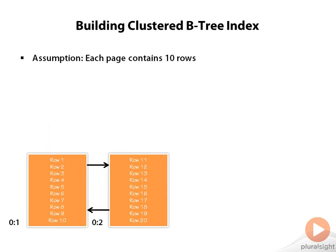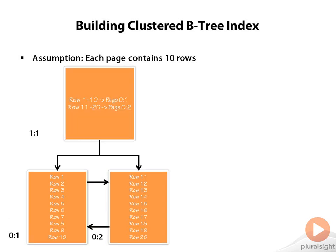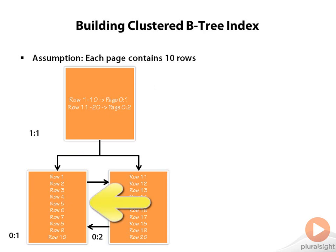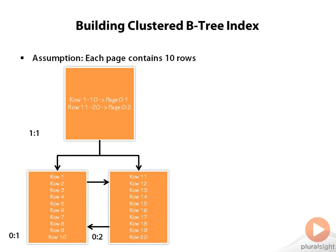However, the database needs one more page to track those entries. Let's introduce one more level here. This new page is the root page in this scenario. It's on level 1 and it's a single page. It has two entries: the first entry indicates that rows 1 to 10 are in page 0,1 and rows 11 to 20 are in page 0,2.